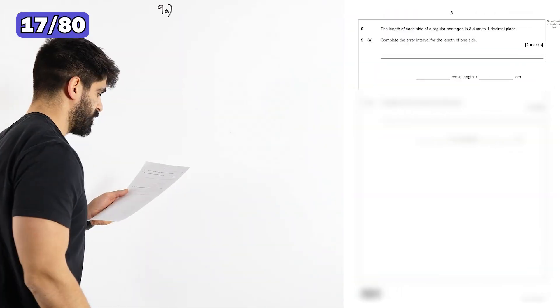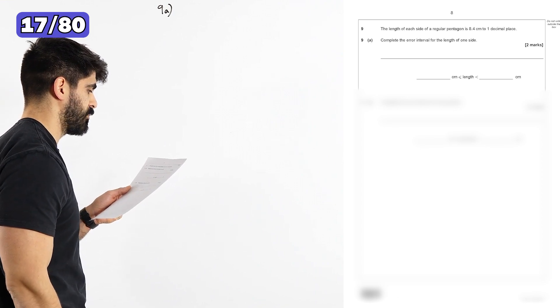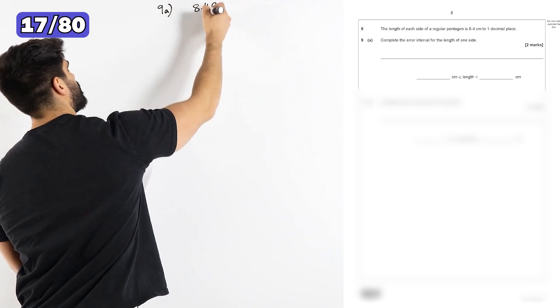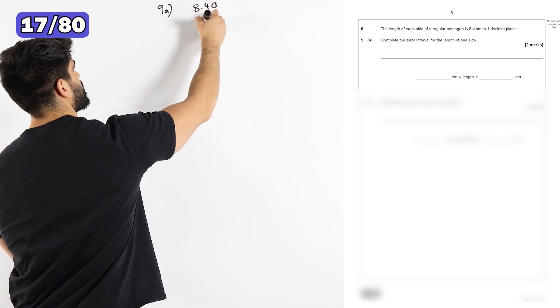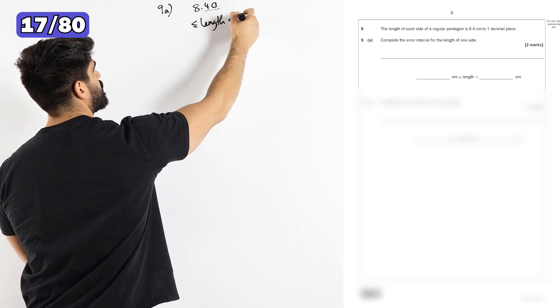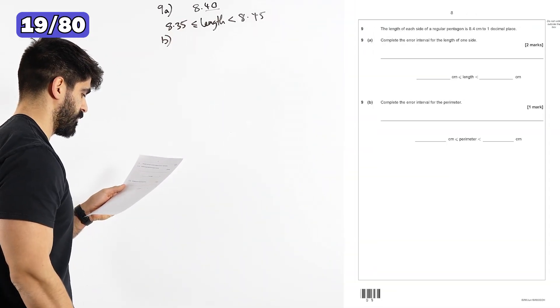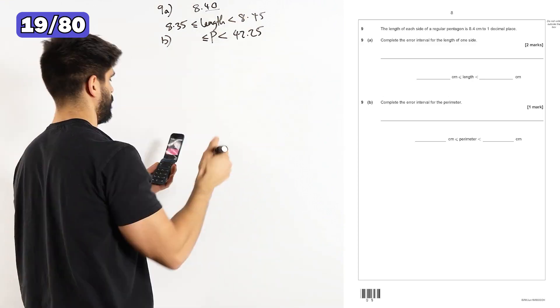Question nine. The length of each side of a regular Pentagon is 8.4, correct to 1dp. Complete the error interval. So 8.4, we had a zero. I've just been doing this with my GCSE lot. So you treat that as 40, you add five, and you subtract five. Part B, complete the error interval for the perimeter. 42.25, 41.75.